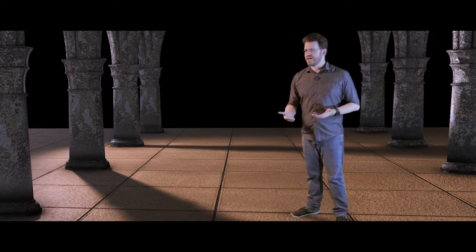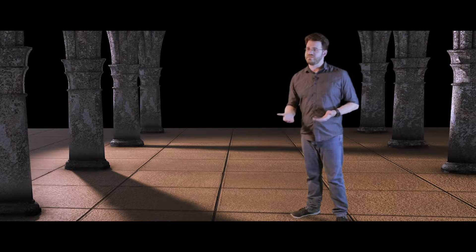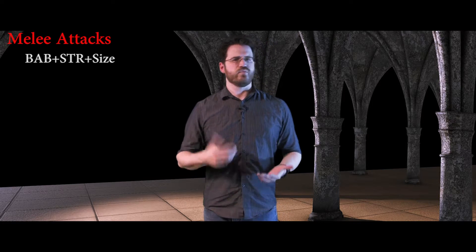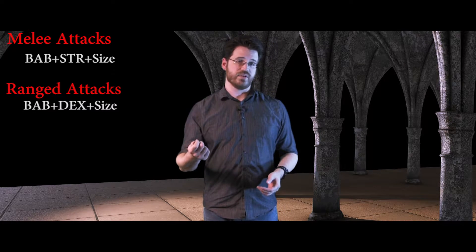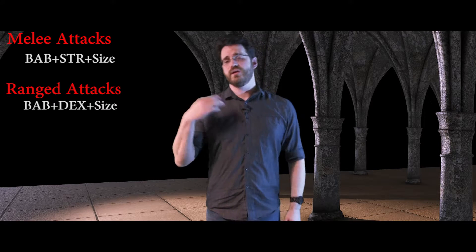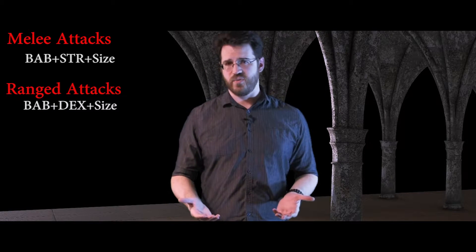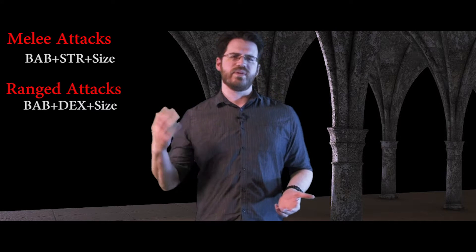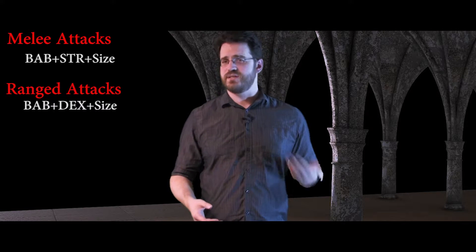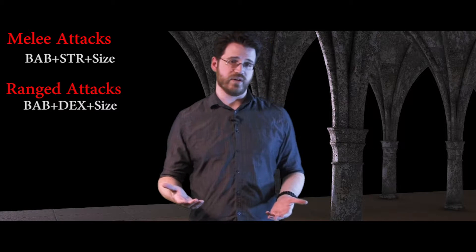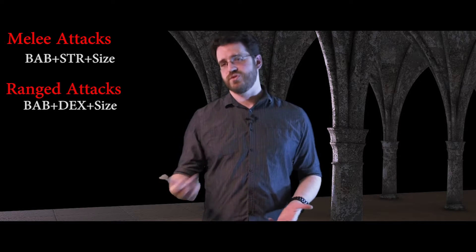To figure out the attack bonus you add to your dice roll, you need only add a few modifiers together. For melee attacks, you add your base attack bonus — as determined by your class and level — to your strength modifier and your size modifier. For ranged attacks, you add your base attack bonus to your dexterity modifier and your size modifier. Some class abilities or feats can change this formula. For instance, the Weapon Finesse feat allows you to use your dexterity modifier instead of your strength modifier on melee attacks with certain weapons.